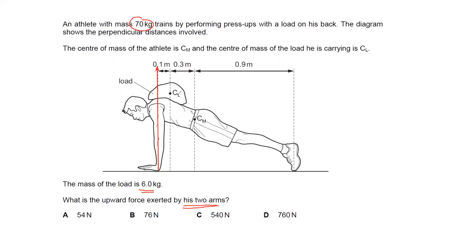The weight of the load is acting downward because weight always acts downward. The value of the weight: since the mass of the load is 6 kilograms, weight equals mass multiplied by gravity, so 6 multiplied by 10 gives a weight of 60 newtons. There will be a 60 newton force downward because of the load.